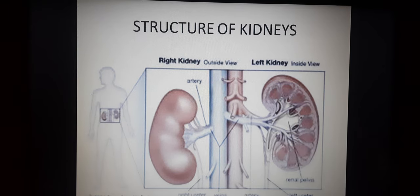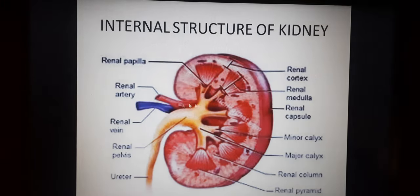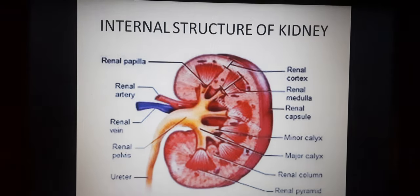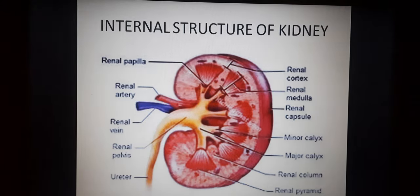The length of the kidney is 10–12 cm, width is 5–7 cm, thickness is 2–3 cm, and average weight is 120–170 grams. On the concave side of the kidney there is an opening called the hilum, through which blood vessels, nerves, lymphatic ducts, and the ureter enter the kidney. The hilum leads to a funnel-shaped cavity called the renal pelvis, with projections called calyx or calyces. The medulla has conical projections called medullary pyramids projecting into the calyces.